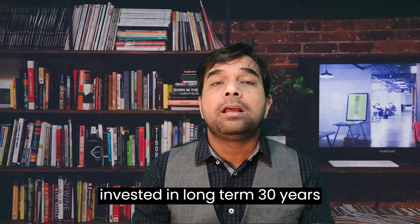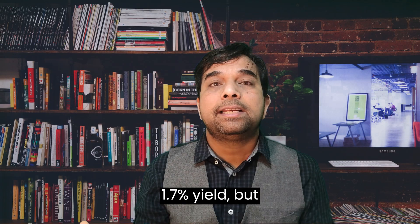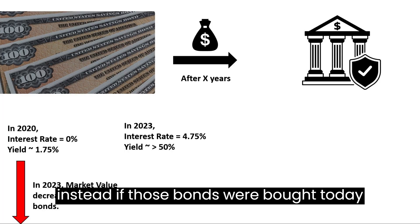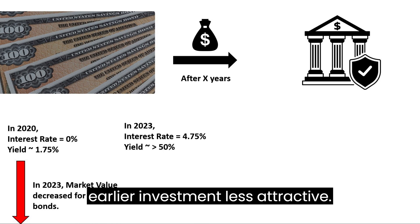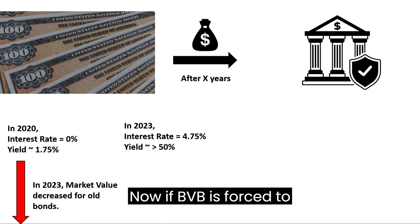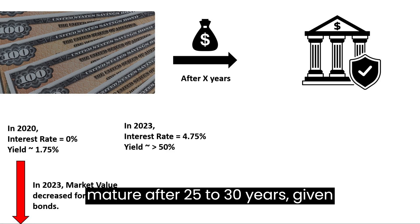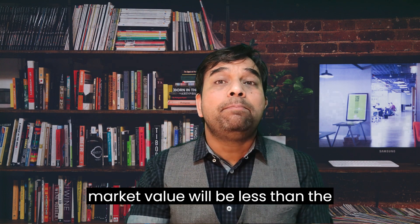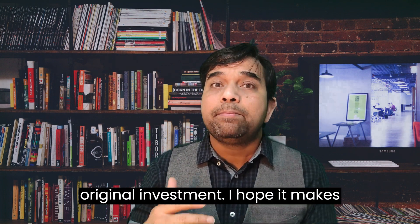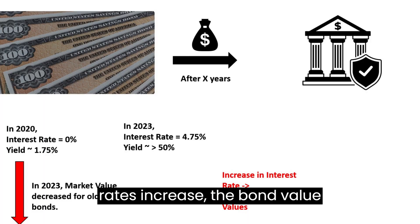SVB had invested in long-term 30-year bonds which were giving around 1.7% a year. But if those bonds were bought today, they would give over 5%, making the earlier investment less attractive. Now, if SVB is forced to sell the same bonds — due to mature after 20-30 years, giving 1.75% yield — then today's market value will be less than the original investment. I hope it makes sense that when central bank rates increase, the bond value decreases.